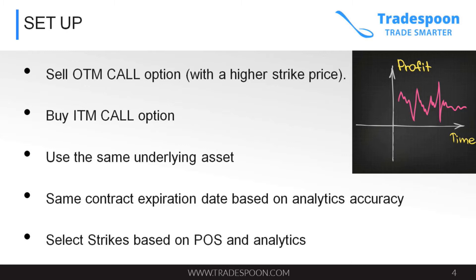If you're bullish on Google and executing a debit call spread, you'd pick a monthly expiration 50 to 75 days out because it gives you more time. You select strike prices based on probability of success and analytics provided at TradeSpoon, such as the probability calculator at tradespoon.com. Under 'My Tools,' you can select the probability calculator or the stock forecast prices to find the most optimal strike price selection.